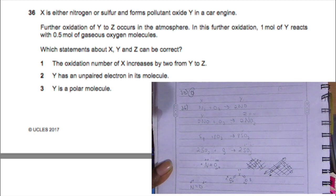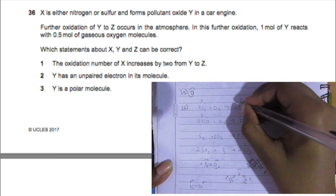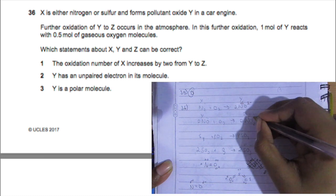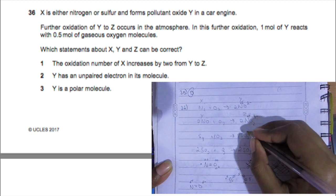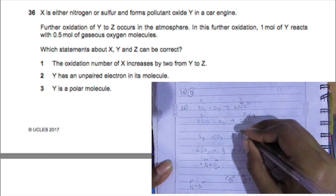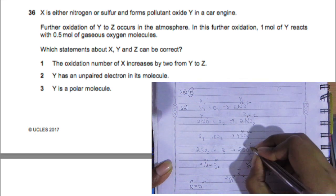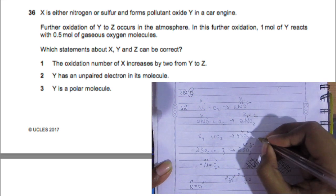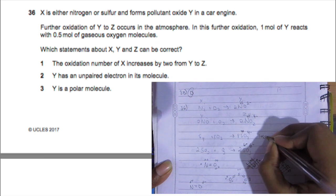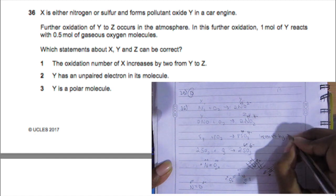The oxidation number of X increases by two from Y to Z. Let's check: for nitrogen monoxide, oxygen is always 2 minus, so nitrogen would be 2 plus. For nitrogen dioxide, there are two oxygens, so negative 4, making nitrogen positive 4. Yes, it increases by two. The same thing happens with sulfur. So option one is correct.